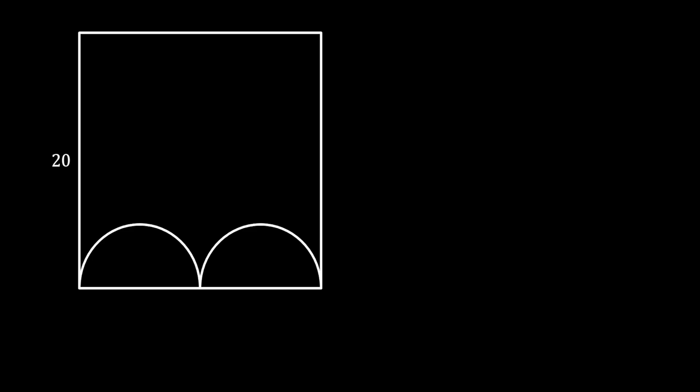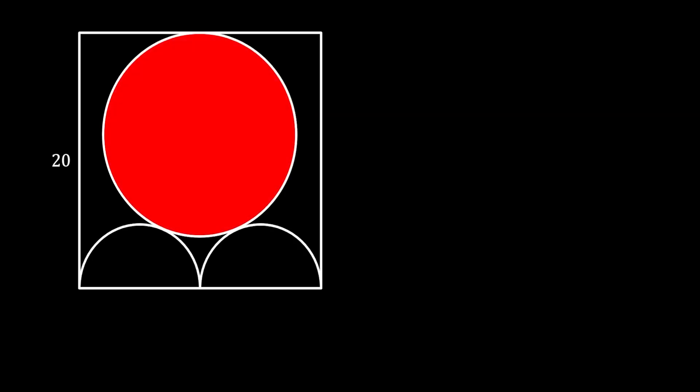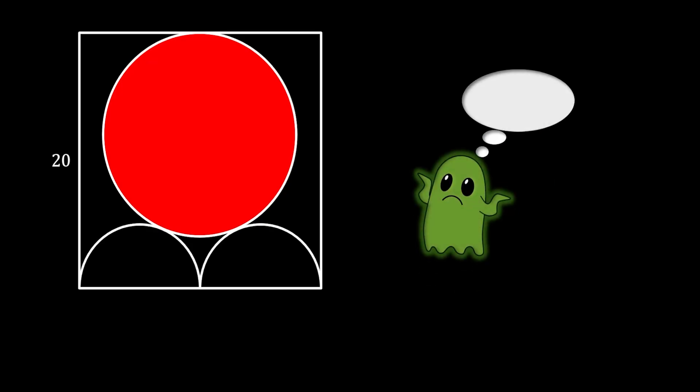In the upper segment of the square, we will inscribe the biggest possible circle that touches the upper side of the square and also touches our two bottom semicircles. Now, the question is, can we calculate the area of this big red circle?